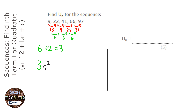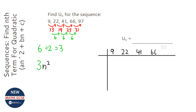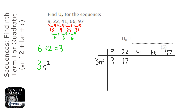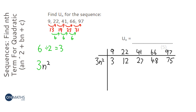So what we do is a little table, and we write in our sequence, which is 9, 22, 41, 66, and 97. And then we write down the sequence for 3n squared: 1 squared times 3 — because n is 1 for the first term — so that's 3. 2 squared is 4 times 3 is 12. 3 squared is 9 times 3 is 27. 4 squared is 16 times 3 is 48. And 5 squared times 3 is 75.